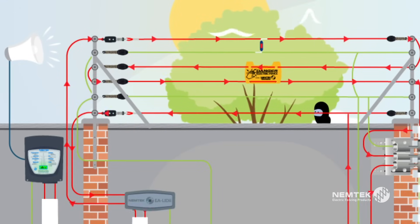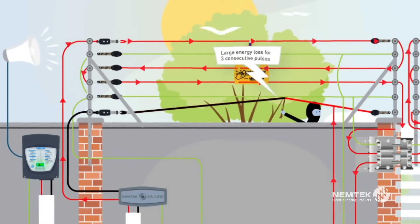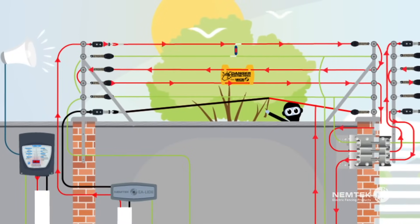If the earth and live wires touch, a short is created. This interruption over three consecutive high voltage pulses will cause the energizer display to go red and the alarm to be triggered.